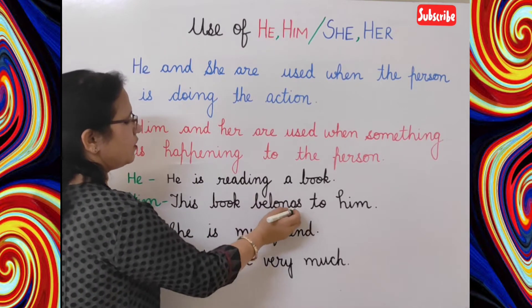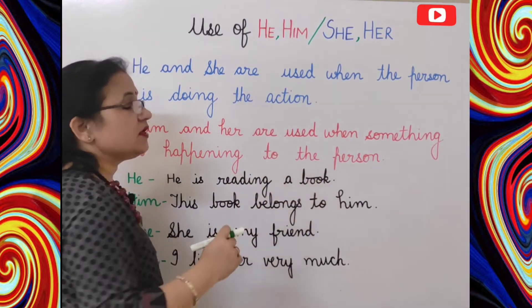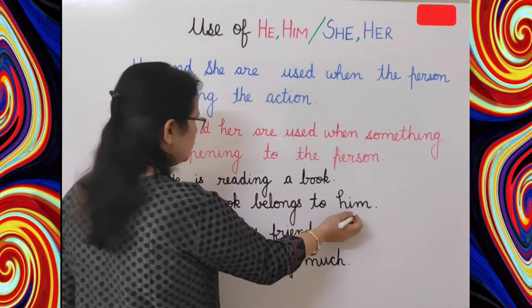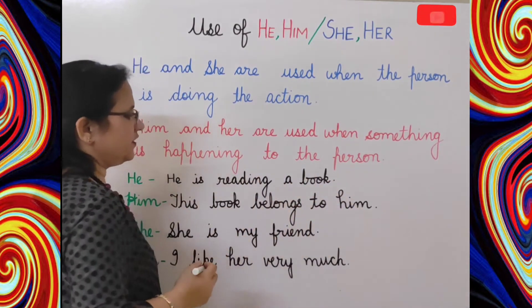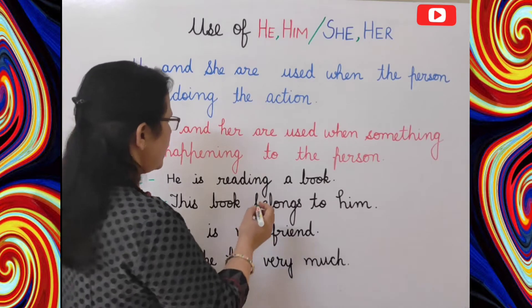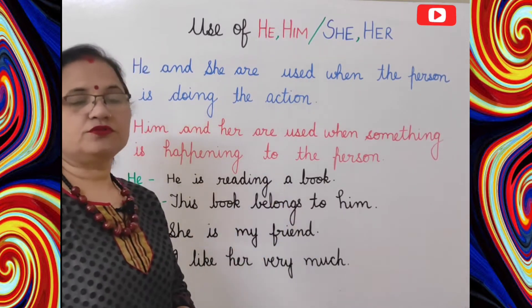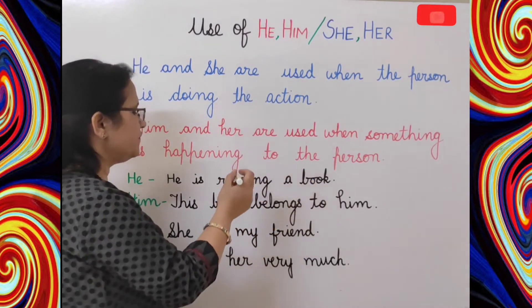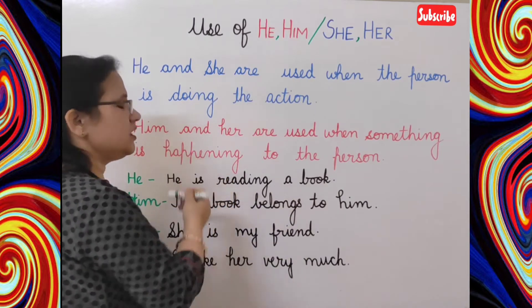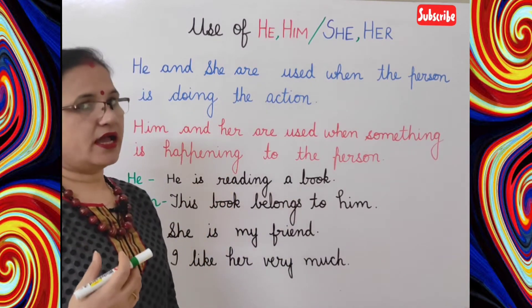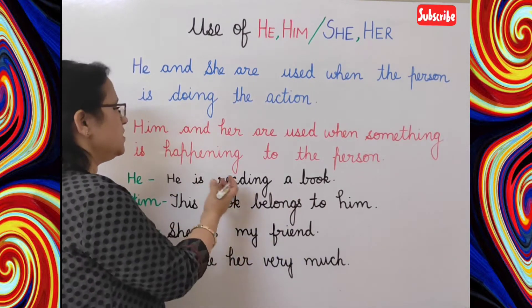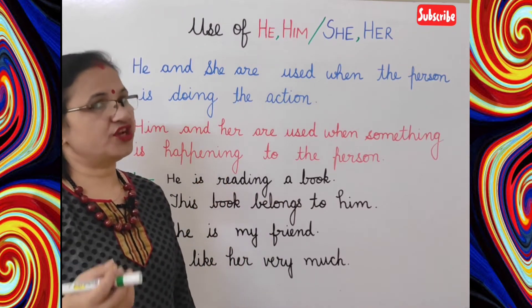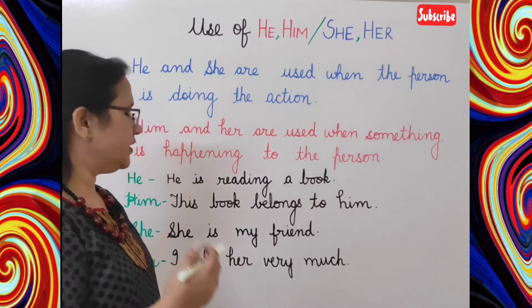Now him: 'This book belongs to him' — yeh kitab uski hai. Here him is used after the action word 'belongs'. So in this way, him is used after the action word and he is used before the action word. Both these pronouns are used for male gender or masculine gender.